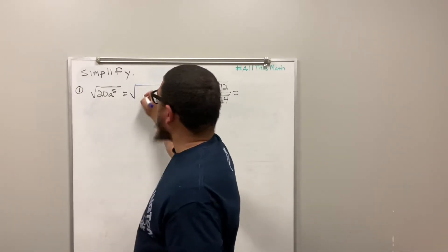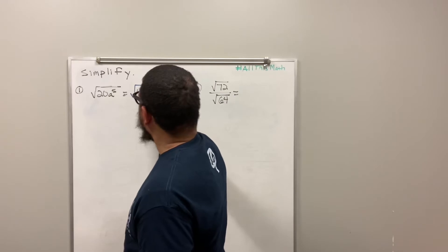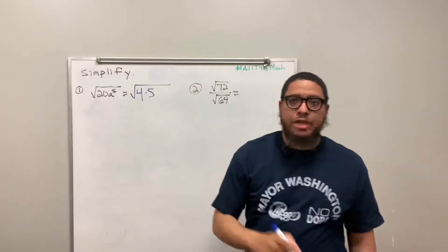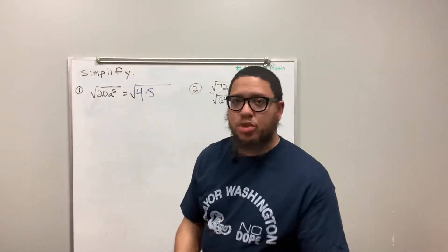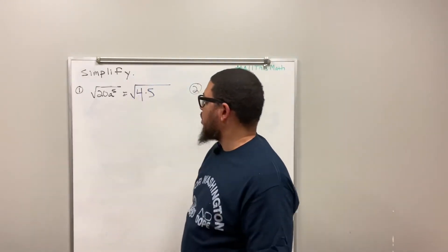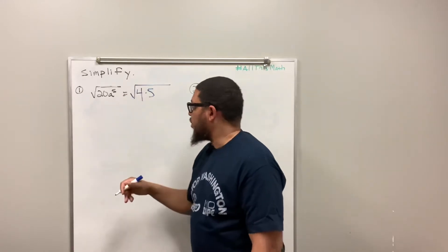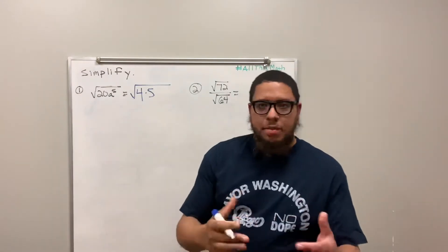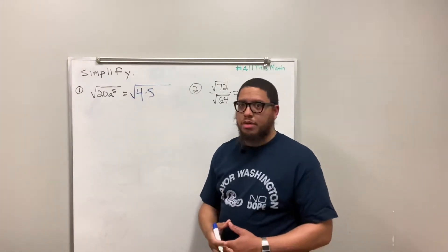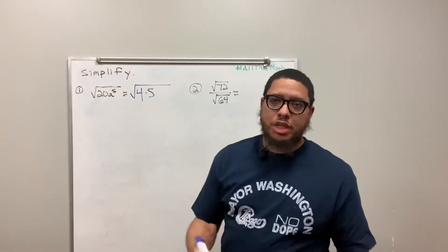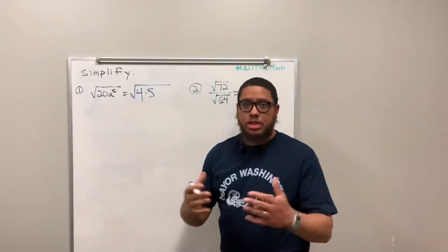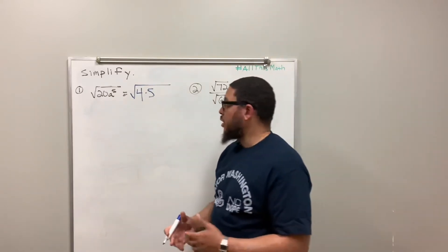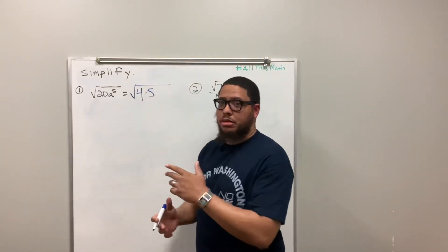Radical. I'm going to break 20 down into 4 times 5. Since 4 is a perfect square, it can come out of the radical sign. Think of this like incarceration — people that have escaped from the belly of the beast, like Assata Shakur and Russell Maroon Schultz. That's what we want to do for some of these numbers in here.